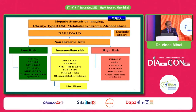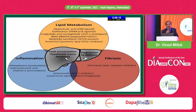Once diagnosed, we should always grade severity as mild, intermediate, or high — similar to how we manage HbA1c: if it is more than 9% at diagnosis, we use triple therapy or insulin. The same applies here — the more severe the disease, the more intensive the treatment. For NAFLD, three targets must be addressed: lipid metabolism, fibrosis, and inflammation. Weight reduction targets all three, but no single medicine addresses all three. In times to come, we will have medications targeting each separately.